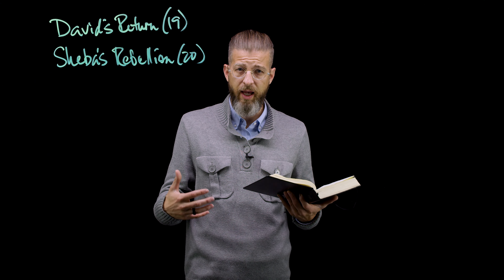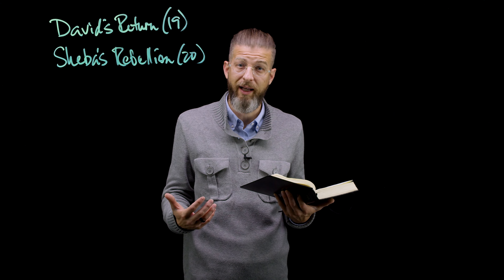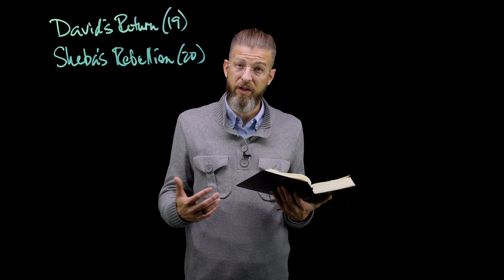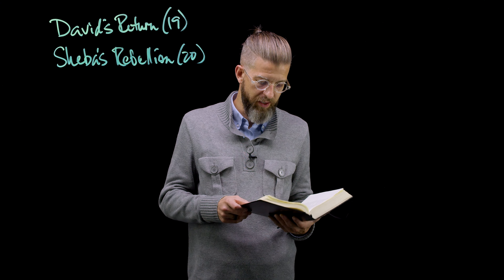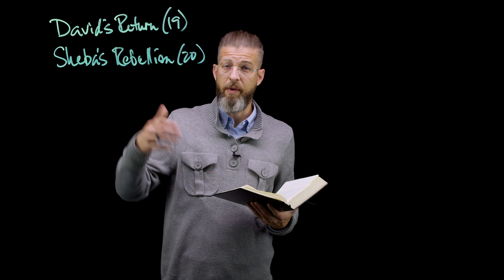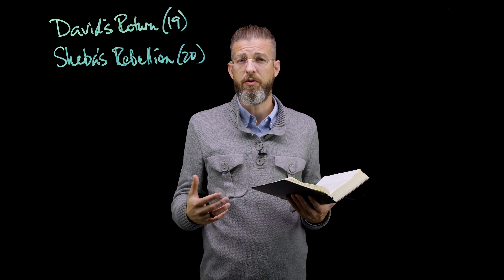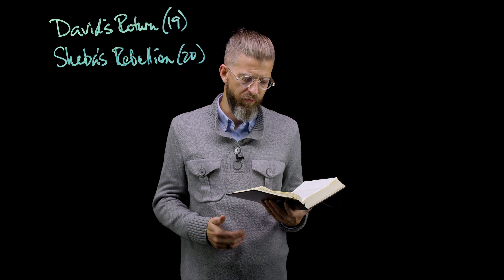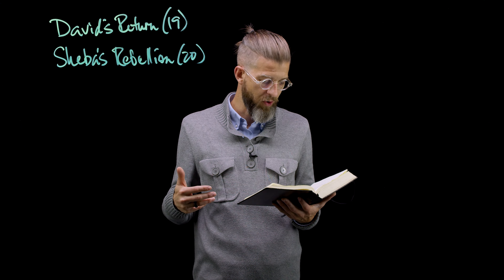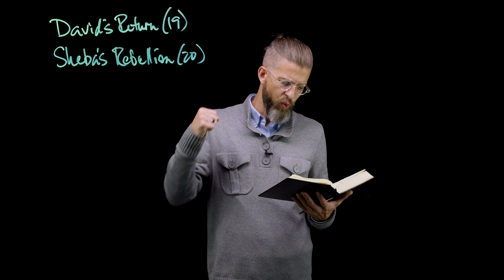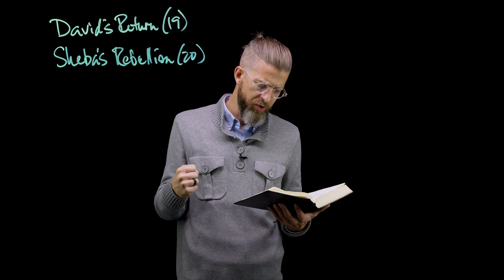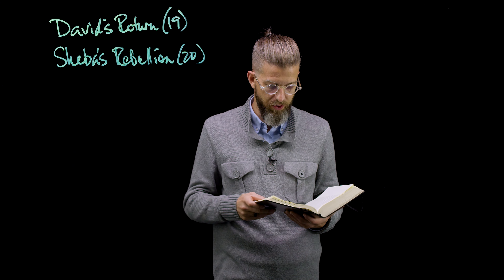The argument about who brings David back has to do with wanting to be in the good graces of King David. Then in chapter 20, Sheba's rebellion begins. There was a troublemaker named Sheba, son of Bichri, a Benjamite — from the tribe of Saul — who sounded the trumpet and shouted, we have no share in David, no part in Jesse's son, every man to his tent, Israel! All the men of Israel deserted David to follow Sheba, but the men of Judah stayed by their king all the way from the Jordan to Jerusalem. As soon as David was crossing over, that tension became a full-scale rebellion.